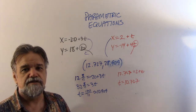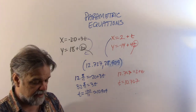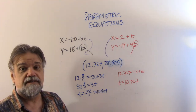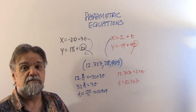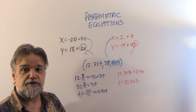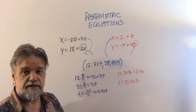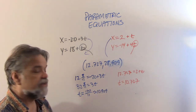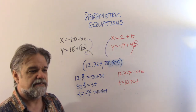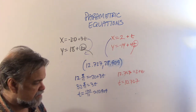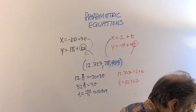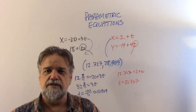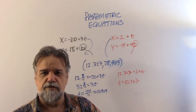So the answer is: almost, but not quite. The two paths do intersect, but the red ant crosses that intersection point slightly before the black ant does. Let me show you what this looks like on a graph.